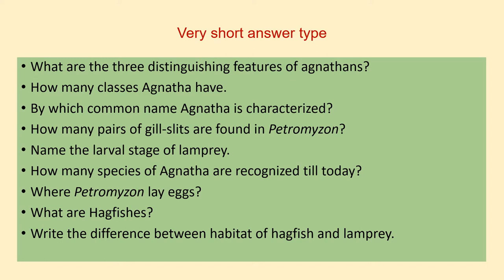Second question is: how many classes does Agnatha have? Third is: by which common name is Agnatha characterized? Next is: how many pairs of gill slits are found in Petromyzon?